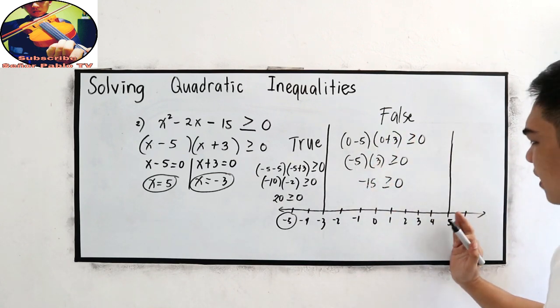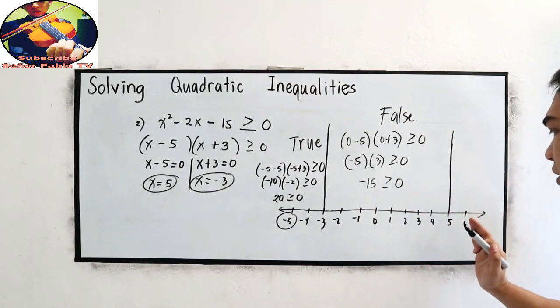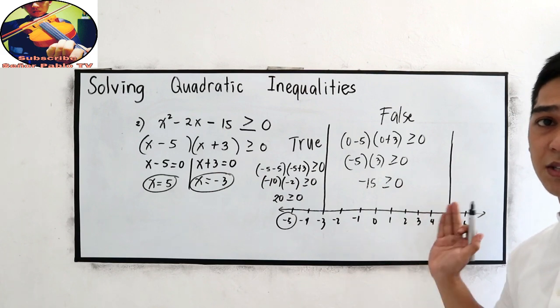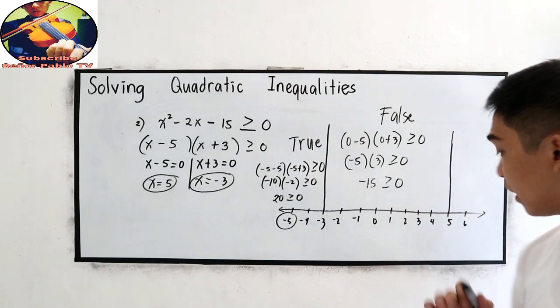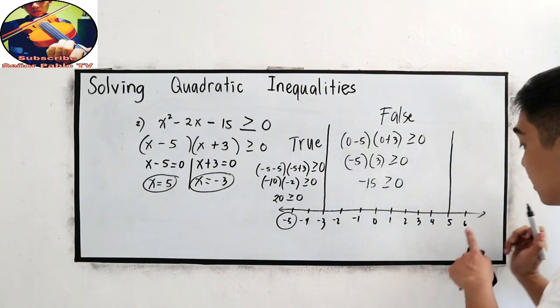Now, let us try the numbers on the right side of positive 5. Okay. Choose 6, positive 6, positive 7, positive 8, positive 9, positive 10. It's up to you. But I will pick the smallest one, the 6.